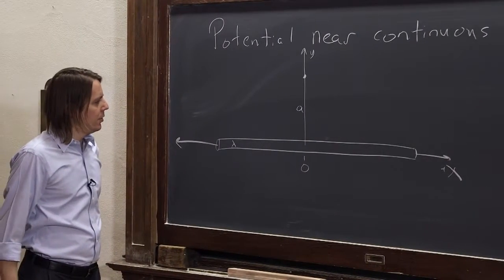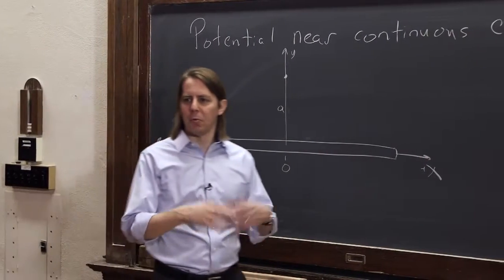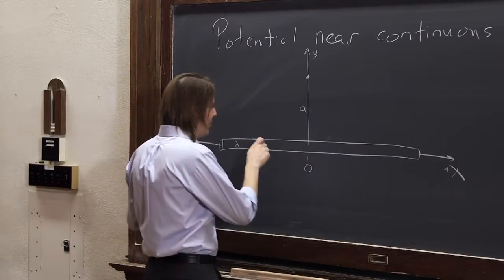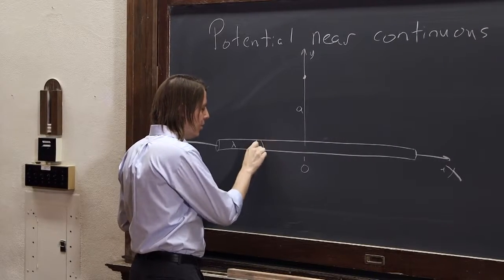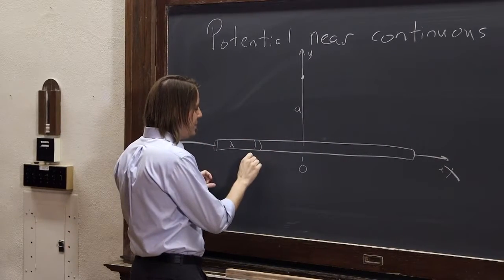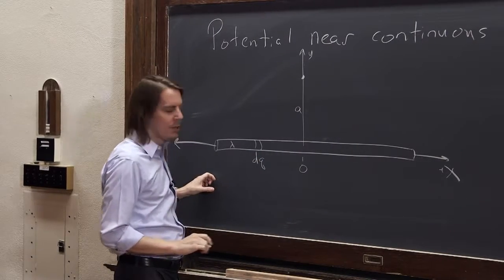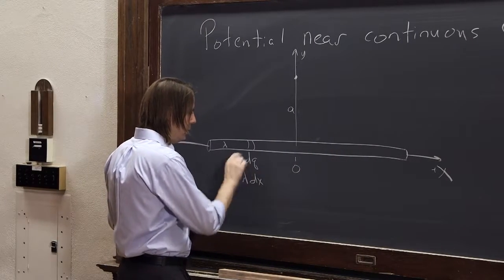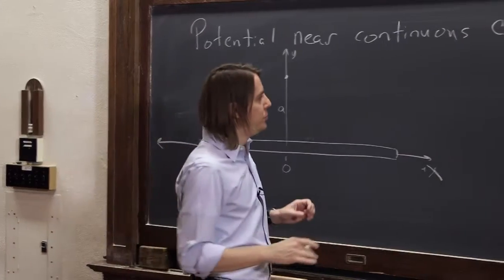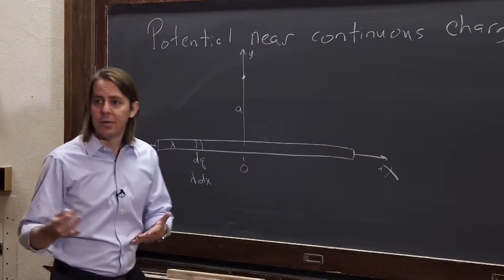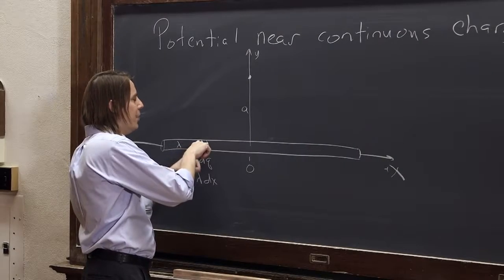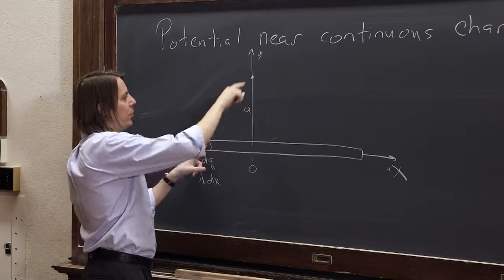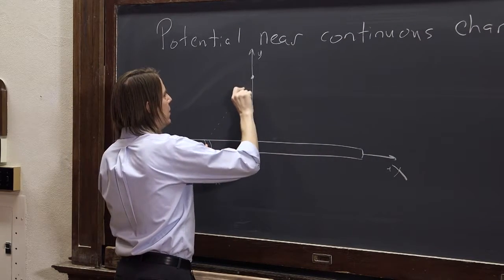How do we get the potential? Just like with the electric field, we don't have a formula for a rod — we have a formula for a point. So we do the same thing: we break the rod up and think about some little piece with charge dq. In terms of x, dq equals lambda times dx. Then we write the differential potential — how much potential does this little piece create at P? We treat it as a point charge at some radius r away.